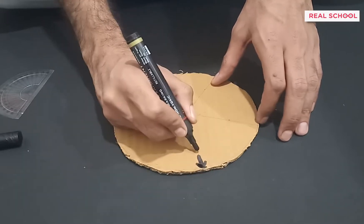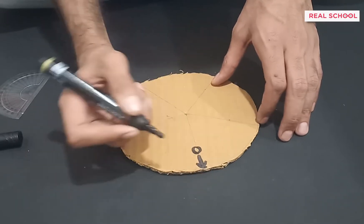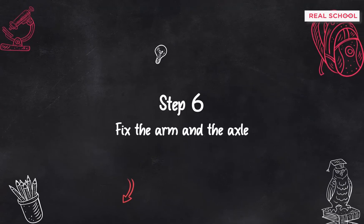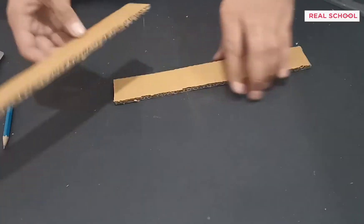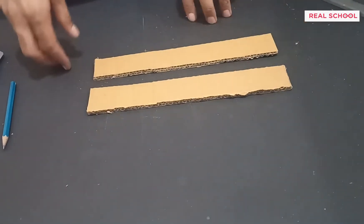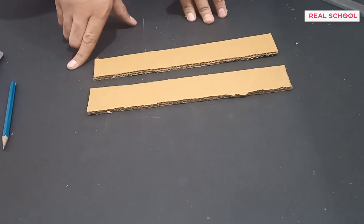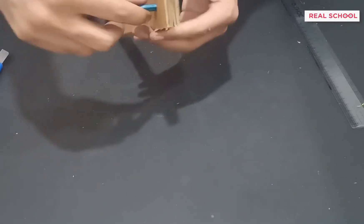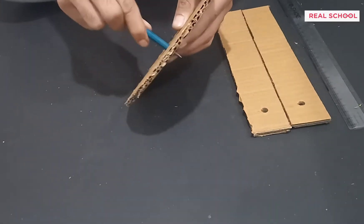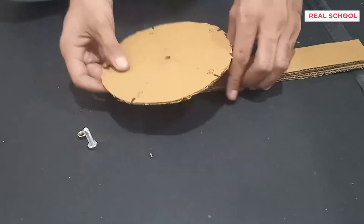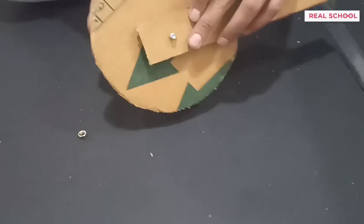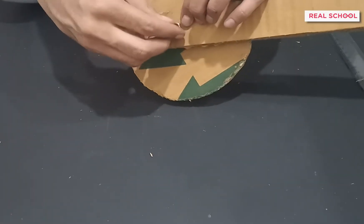Mark any one marking as the zero position with a colored sketch pen. To complete the trundle wheel, an arm and an axle are required for it to rotate. Using the same cardboard, cut out two long rectangular strips for the handle. Make precise matching holes for the axle — a nut bolt is used, fixed through the center by making a hole. The handle strips are fixed to the axle, and the trundle wheel is complete.